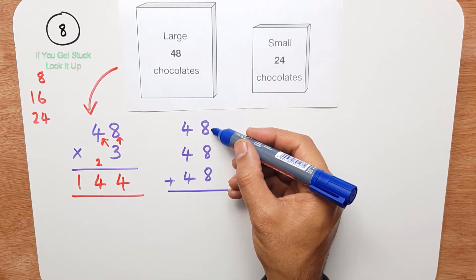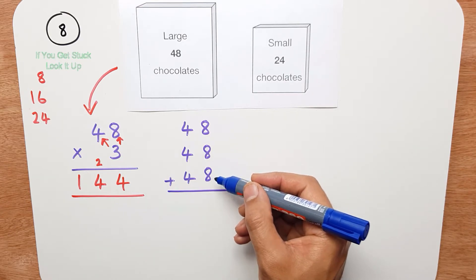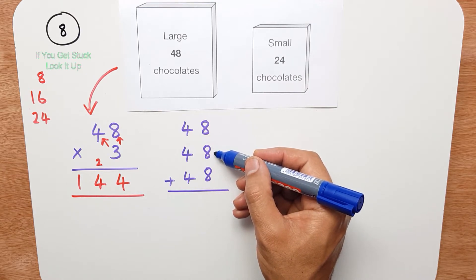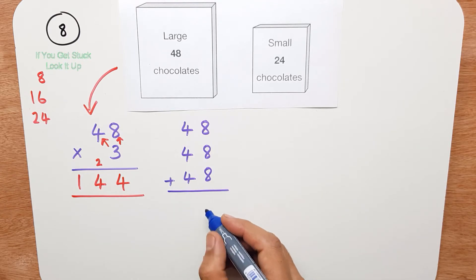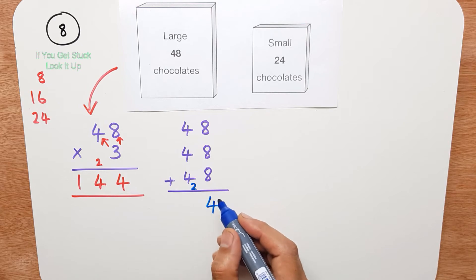Now what I'm going to do is try it this way, by adding 48, 48 and 48. So let's start on the right, 8 add 8 is 16, add another 8 is 24. So I put the 4 down, and I carry the 2 over to the next column.